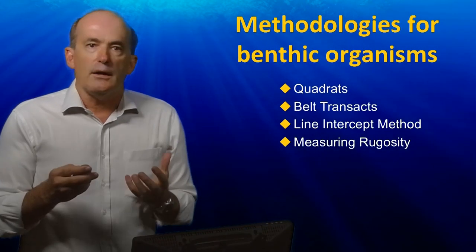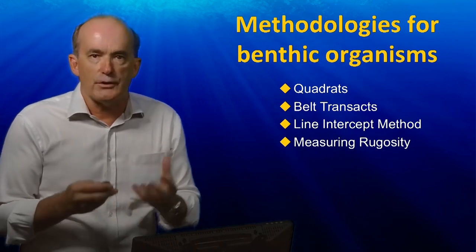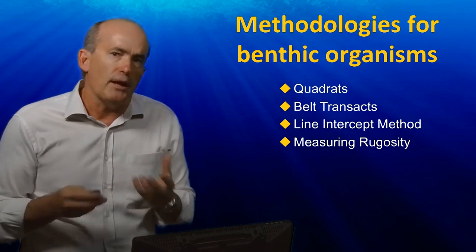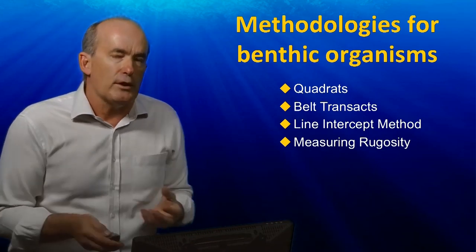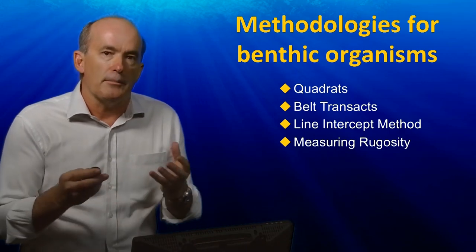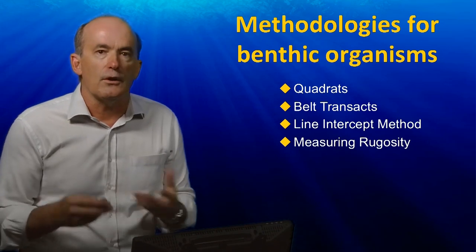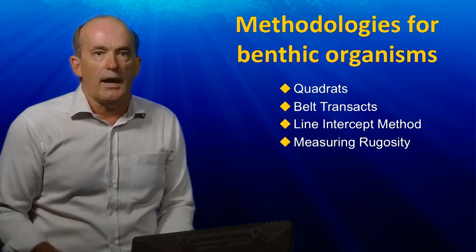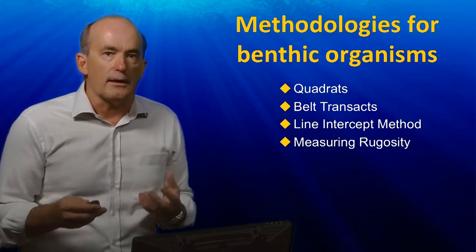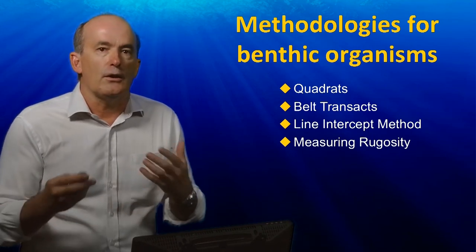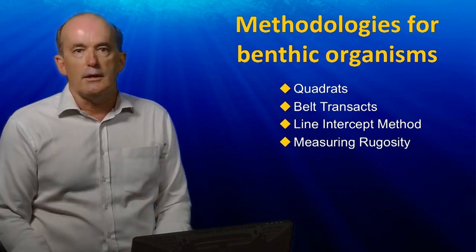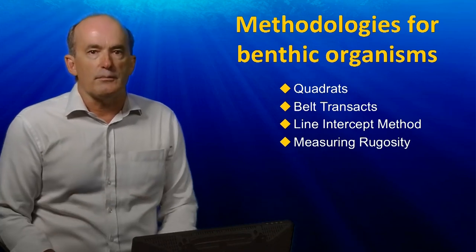What I want to do now is to review a couple of common methodologies which are used to measure the distribution and abundance of benthic organisms. Benthic organisms, as you'll remember, are essentially fixed to the bottom of the ocean. They may be associated with mangroves, seagrass meadows, and coral reefs. This is an introduction to some of these more basic techniques, and there is certainly a lot to learn about field methods that go beyond what I'm going to tell you here.